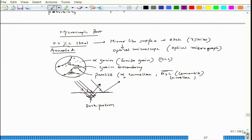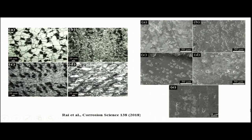Let us see whether this is experimentally verified — let me show some pictures. Looking at this particular set of ACM micrographs: this steel is 0.17% carbon steel with small amounts of manganese and silicon. Those who want to verify can refer to this particular paper — this work was done at IIT Kanpur. What was done: that particular steel was deformed and recrystallized.